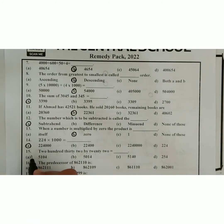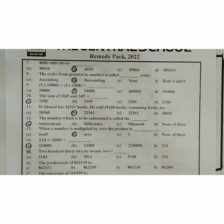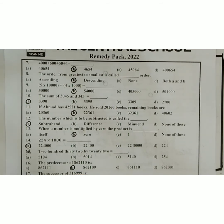MCQ number fifteen is incorrect, so cross it — we don't have to solve it. Next, question sixteen: the predecessor of this number. Predecessor means we move backward. The last digit is ten, so the predecessor of ten is nine. Find the option that has nine — that is the correct answer.